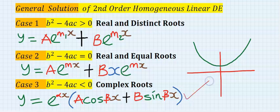Our general solution becomes this. That is, e^(αx) in bracket, A cos(βx) + B sin(βx).